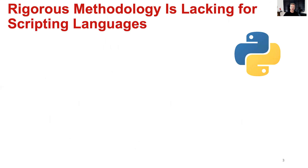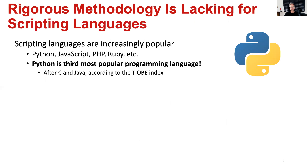Now the picture is completely different for scripting languages, where a rigorous methodology is really lacking. Scripting languages are increasingly popular — think about Python, JavaScript, PHP, Ruby, etc. According to the Tiobe index, Python is the most popular scripting language and overall the third most popular programming language after C and Java.